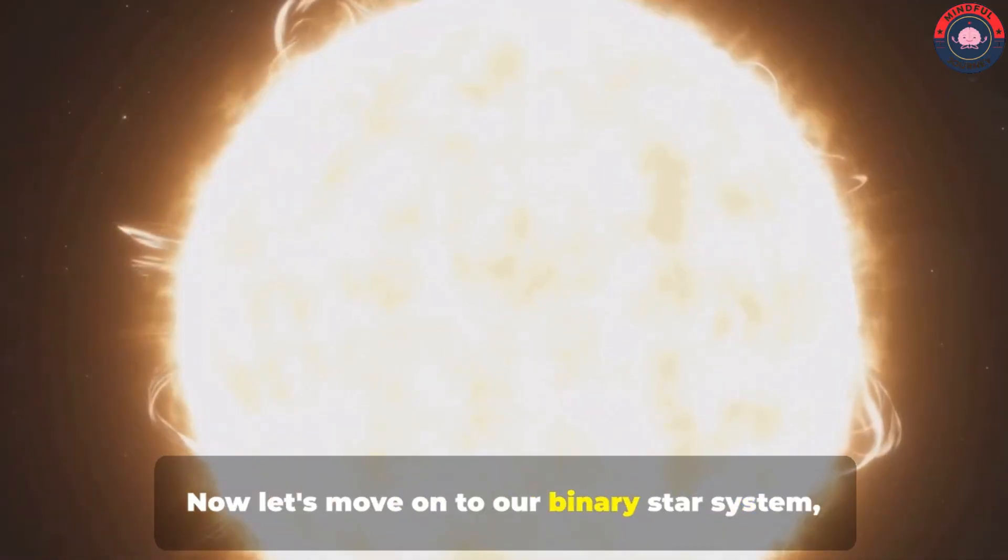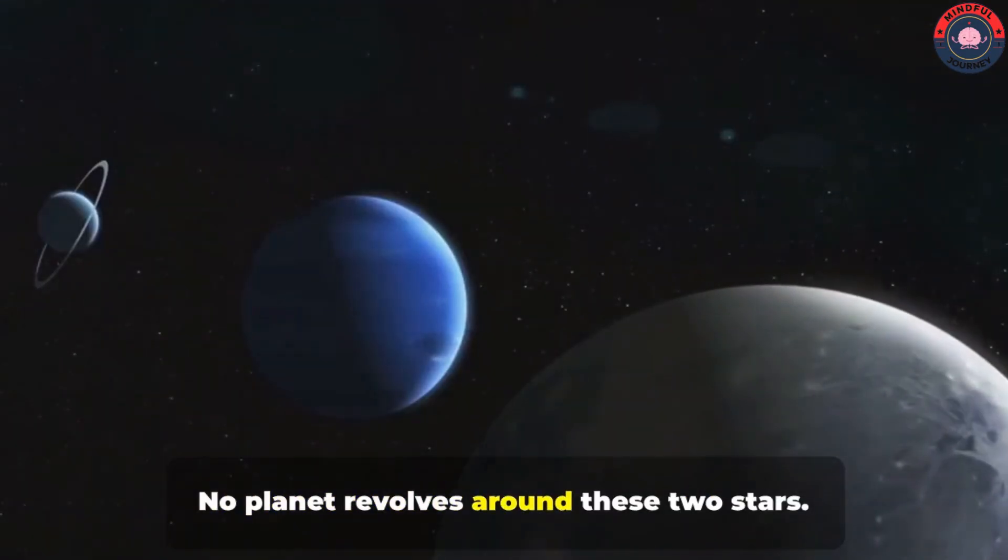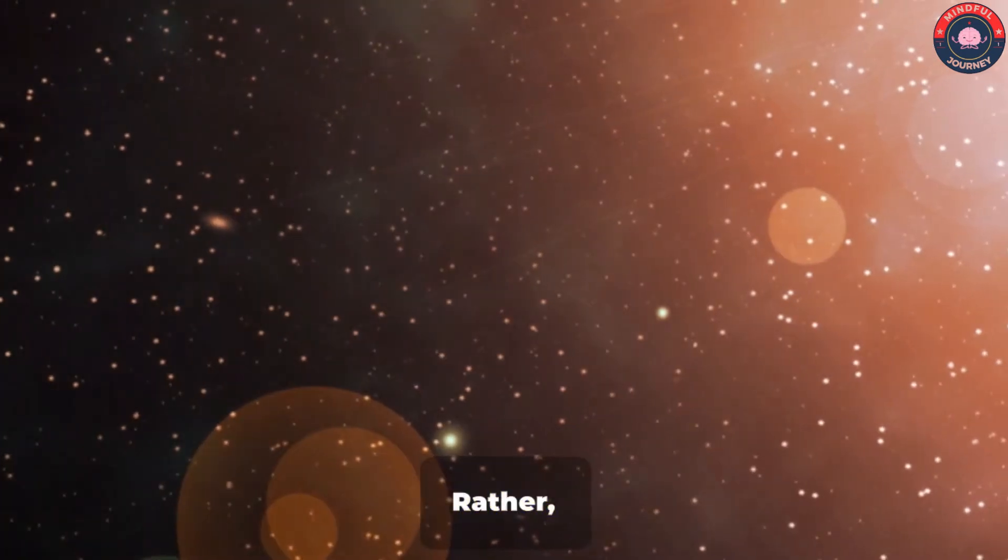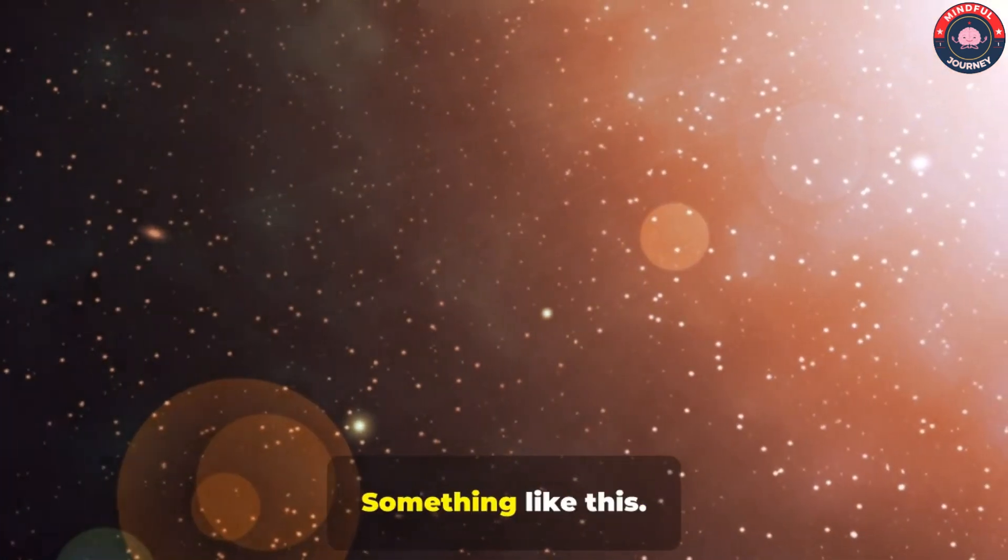Now let's move on to our binary star system, HD 188753B and HD 188753C. No planet revolves around these two stars. Rather, these two stars revolve around the planet and the main star. Something like this.